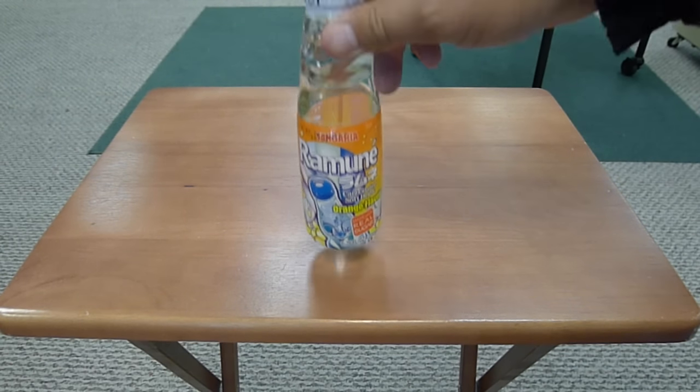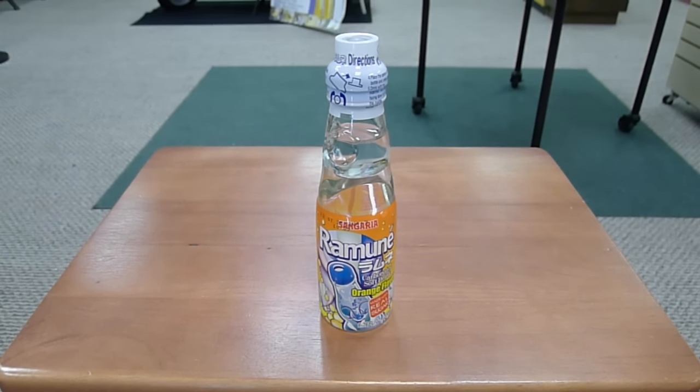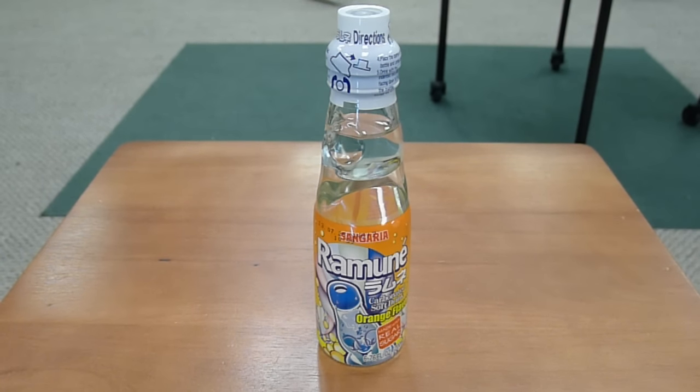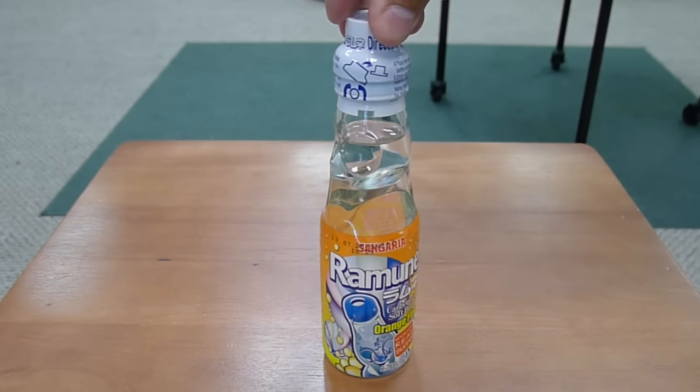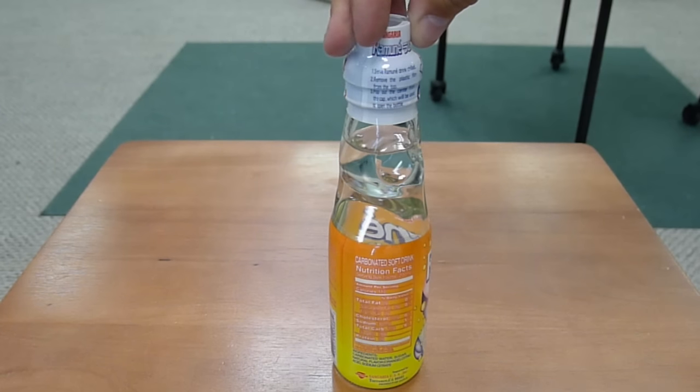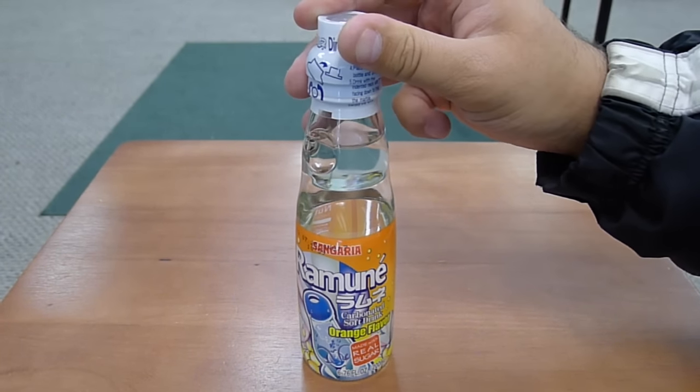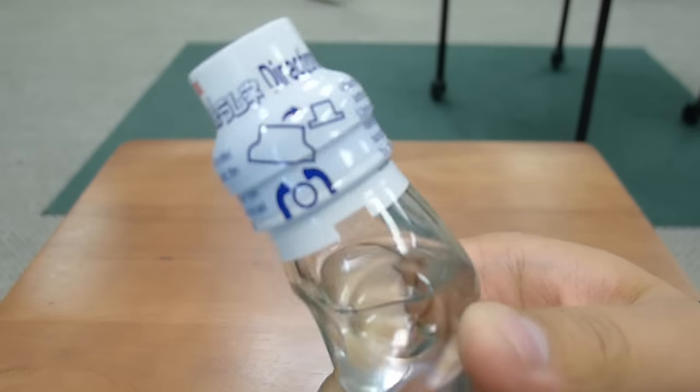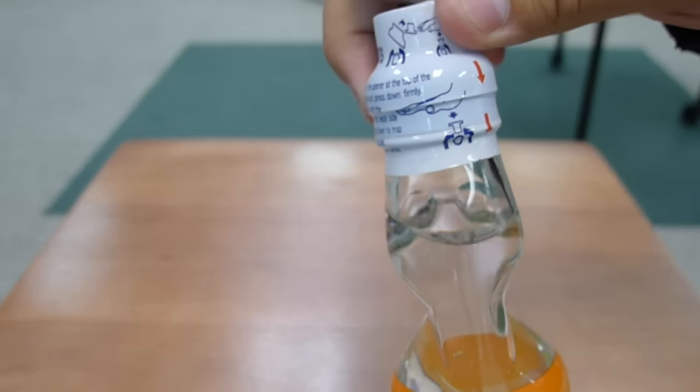And we're going to show you how to open one of these. Now, this is Ramune. It's from Sangaria. Ramune is a staple of various Japanese anime. It's interesting in that there's a trick to opening it. Now, there's instructions on the lid, but nobody really reads those. We all check informational videos on YouTube instead.